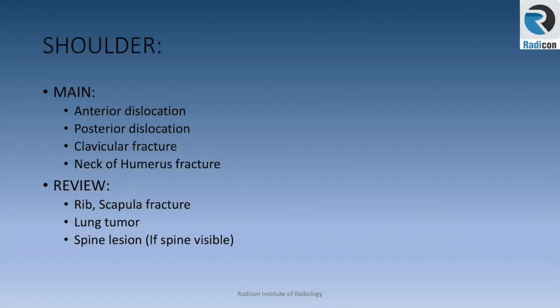Let's review important points in shoulder X-rays for rapid reporting. Main abnormalities to look for are anterior and posterior dislocation, clavicular fractures, and neck of humerus fractures. Review areas include rib and scapula fractures, lung tumours, and spine lesions if the spine is visible.